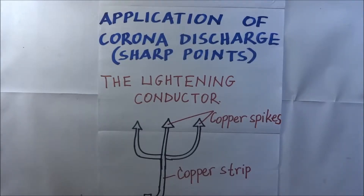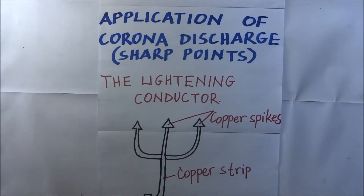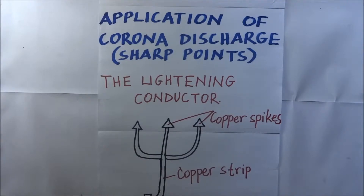We have all experienced lightning and thunder. Lightning comes first, then thunder is heard later since light travels faster than sound. Lightning sometimes destroys buildings and trees, sometimes causing death to people who take shelter under trees when it is raining. To protect a building from the disasters caused by lightning, a device called a lightning conductor or lightning rod is normally placed at the highest point of a building.